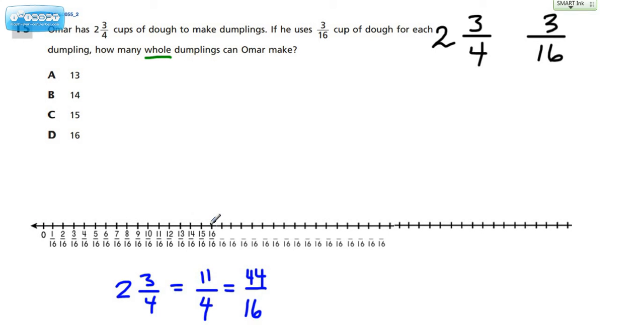If we take this two and three-fourths and rethink it as an improper fraction, that's equal to eleven-fourths. And if we rethink it as sixteenths, because we're going to be breaking it up into equal groups of sixteenths, that's equal to forty-four sixteenths. You can see here, here's one whole from zero, 16 sixteenths represents one. So, if we keep going, counting up to 44, right there would represent 44 sixteenths, which is equal to two and three-fourths.